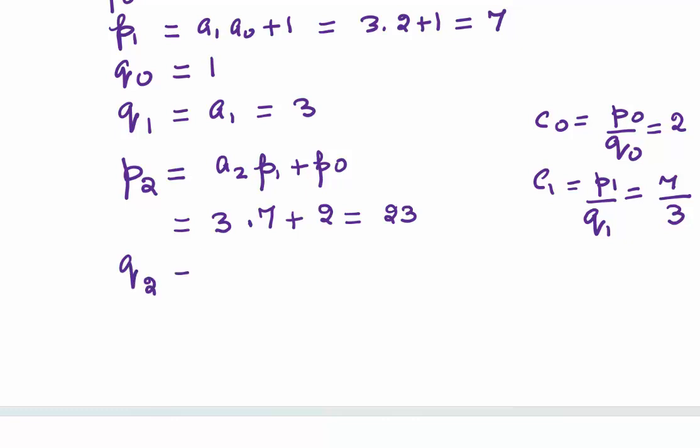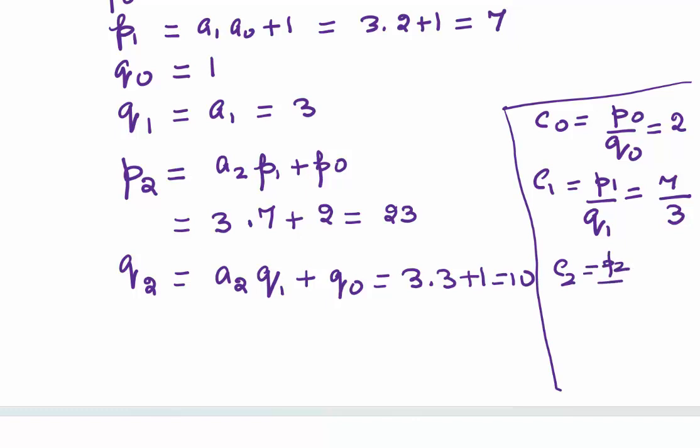Let's see what is Q2. Q2 = a2·Q1 + Q0. What is a2? We saw a2 was 3. Q1 was also 3, and Q0 was 1. So this value comes out to be 10. What is C2 then? C2 = P2/Q2 = 23/10.